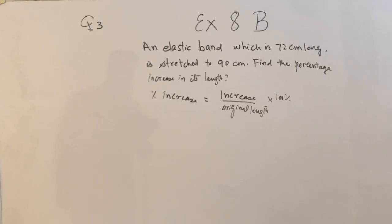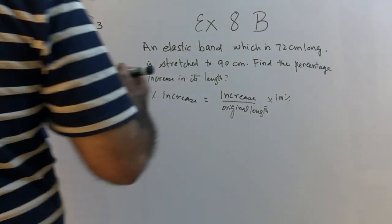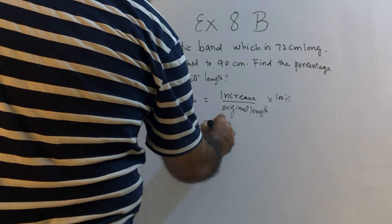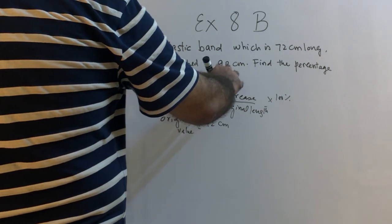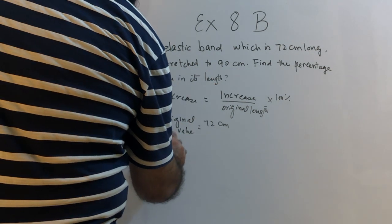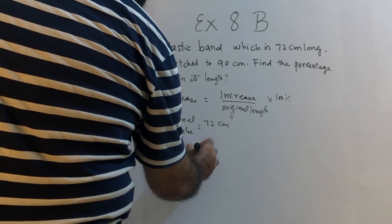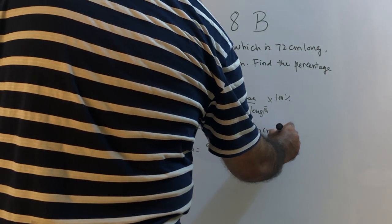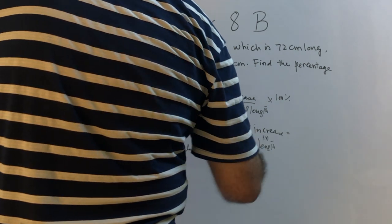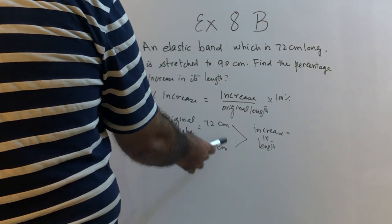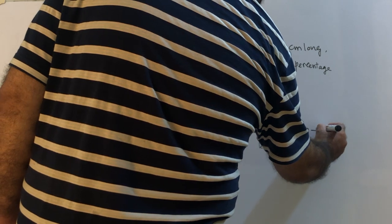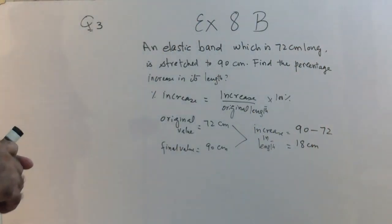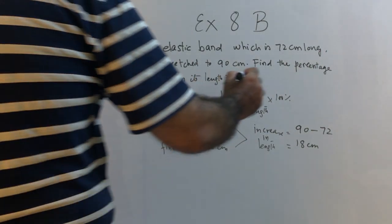To find the increase, the original value is 72 centimeters and the final value after stretching is 90 centimeters. So the increase is 90 minus 72, which equals 18 centimeters.